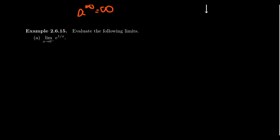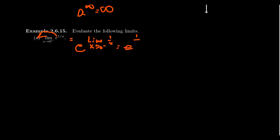Consider the limit as x approaches zero from the left of e to the one over x. We can pull the exponential out since it's a continuous function, giving us e to the limit as x approaches zero from the left of one over x. Approaching zero from the left, one over x goes to negative infinity, so e to the negative infinity equals zero.